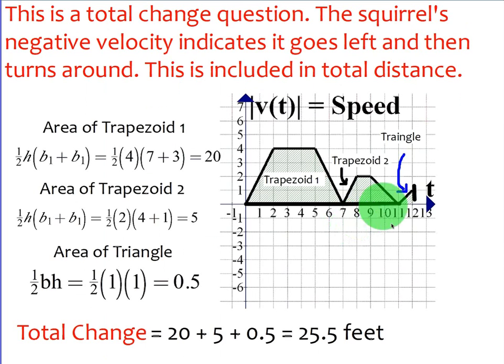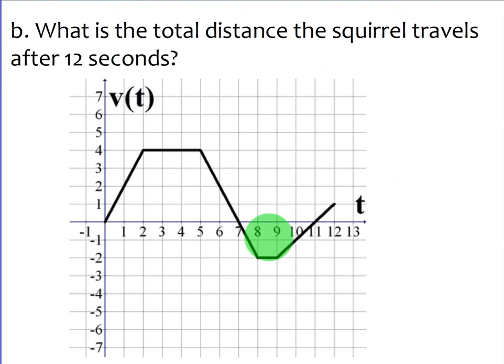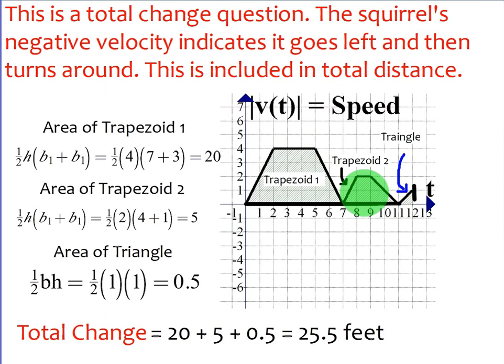So this is a total change question. The squirrel's negative velocity indicates that it goes left and then turns around. This is included in total distance. What I did is I just took that curve, that part of the graph that's below the t-axis, and I flipped it up. So this is being flipped up right here.